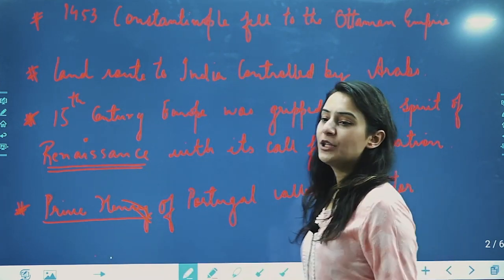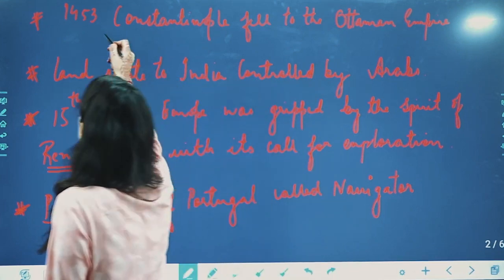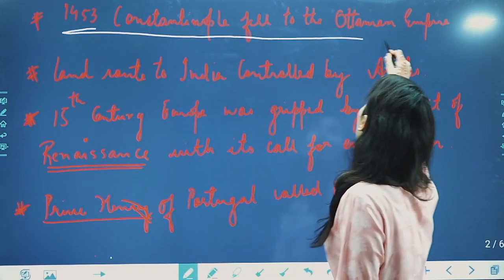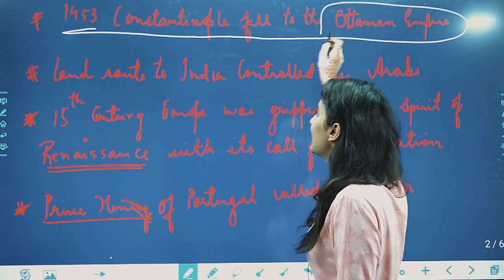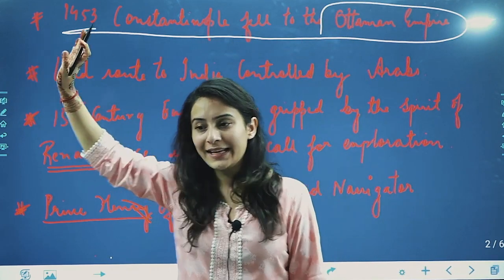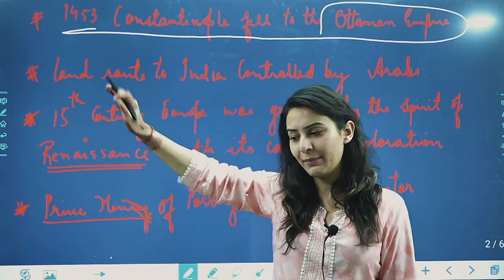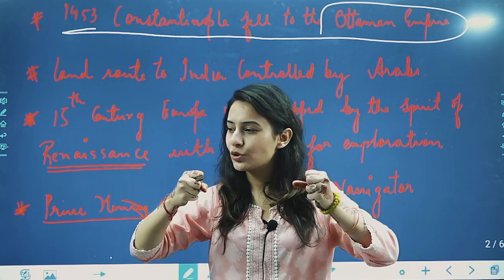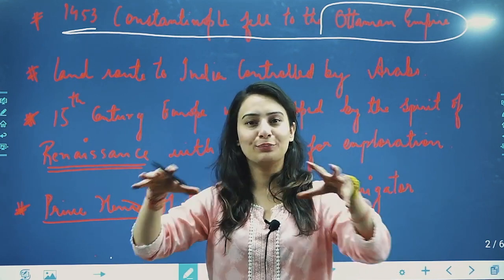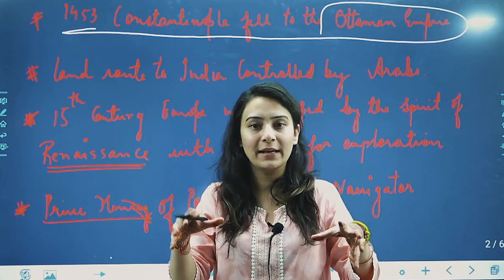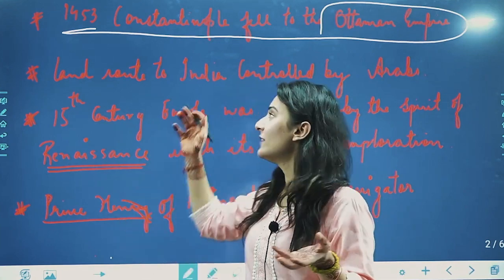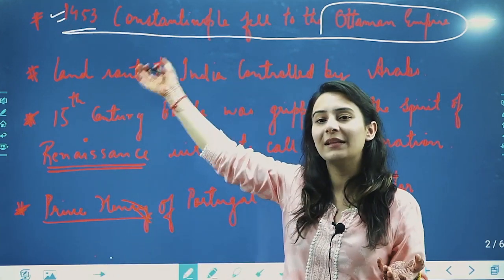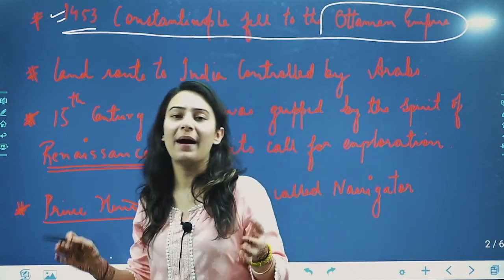First of all, what you need to remember is that in 1453, Constantinople fell to the Ottoman Empire. This is a part of your world history, so just remember that. It fell into the Ottoman Empire in 1453.